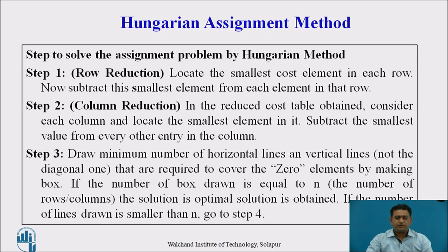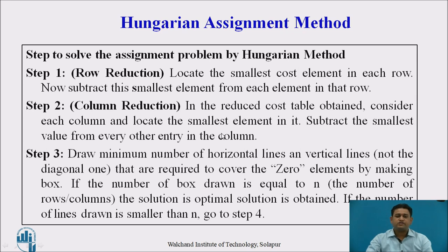The second step is column reduction. After obtaining the table from row reduction, we look at each column and find the smallest element in that column. That smallest element is subtracted from each element in the respective column, so that there is at least one zero in each column. After steps one and two — row reduction and column reduction — there will be at least one zero in each row and at least one zero in each column.